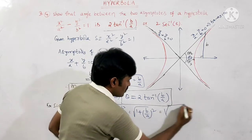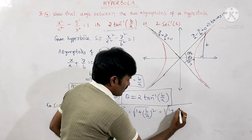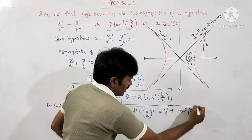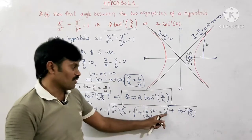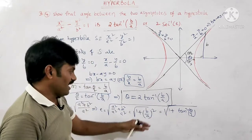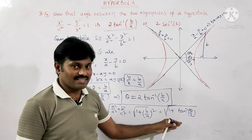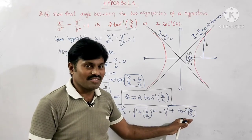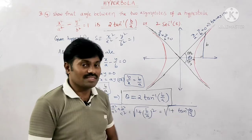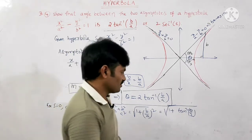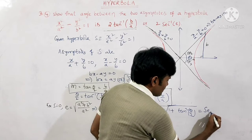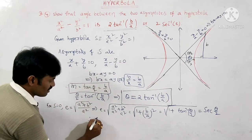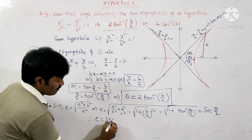Substituting, e = √(1 + tan²(θ/2)). Using the trigonometric identity, √(1 + tan²(θ/2)) = sec(θ/2). Therefore, the eccentricity e = sec(θ/2).